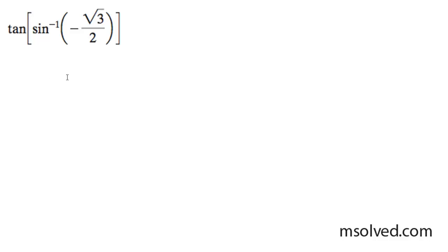Let's find the tangent of the inverse sine of negative root 3 over 2. First I need to solve for the inside here, and how I'm going to do that is I'm going to write this as sine of x is equal to negative root 3 over 2.